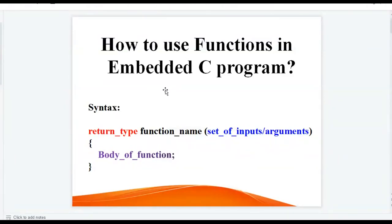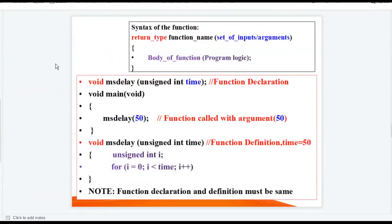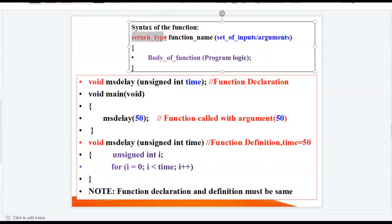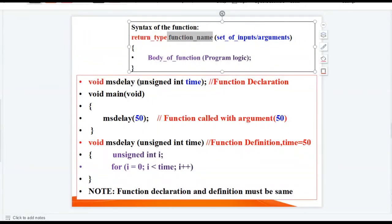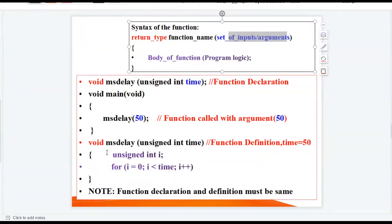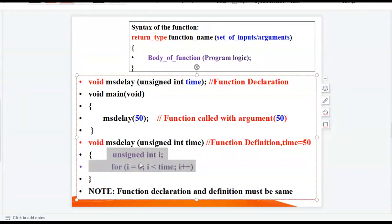In a previous video on how to use functions in embedded C programming for microcontrollers, we covered the types and three different aspects of functions. Let's continue the discussion on the four aspects of function calling. In the given program, the return type of the function is shown, 'ms_delay' is the function name, and 'unsigned integer time' is the set of inputs or arguments, while this part is called the body of the function.